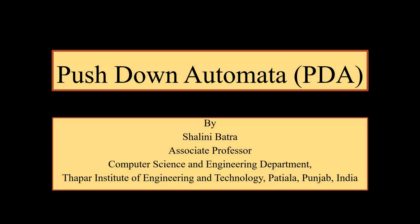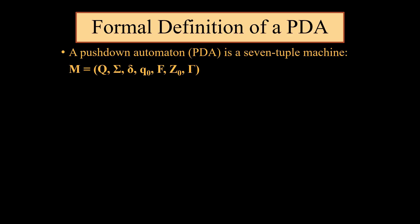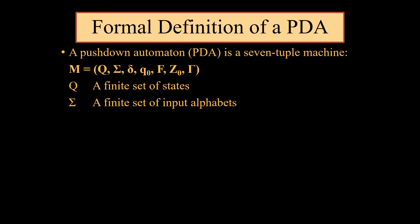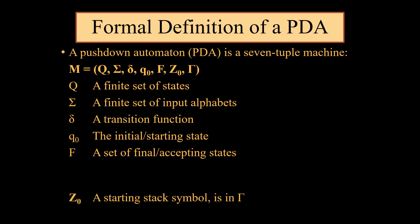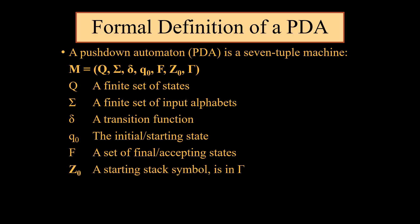Today we will be discussing pushdown automata's second method. The formal definition of pushdown automata is a seven-tuple machine where q is a finite set of states, sigma is a finite set of input alphabets, delta is a transition function, q0 is the initial or start state, f is the set of final or accepting states, z0 is a starting stack symbol in tau, and tau is a finite set of stack alphabets. We are already accustomed to these five tuples in finite automata, and the two new tuples included are z0 and tau.